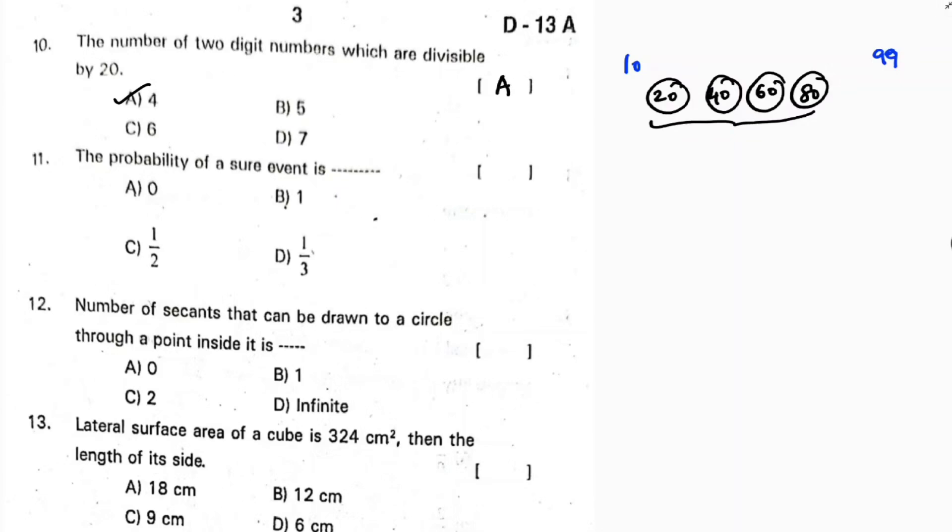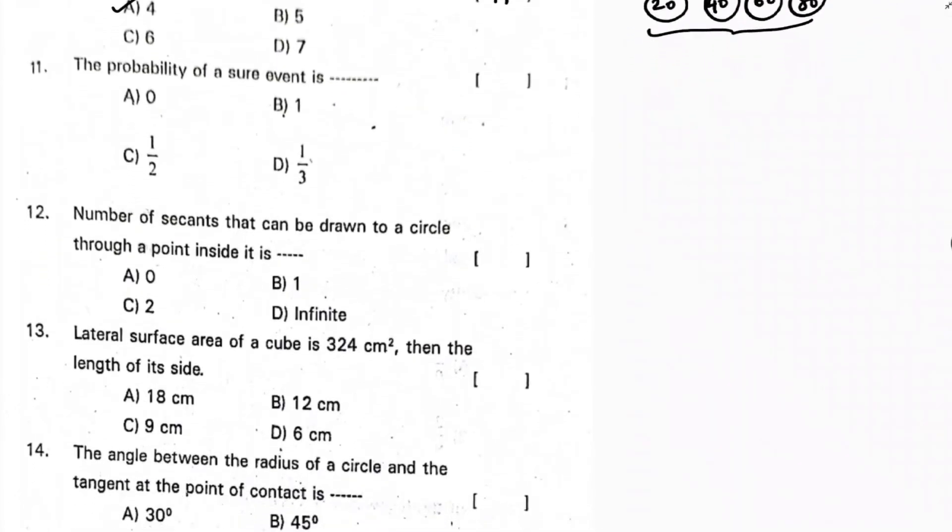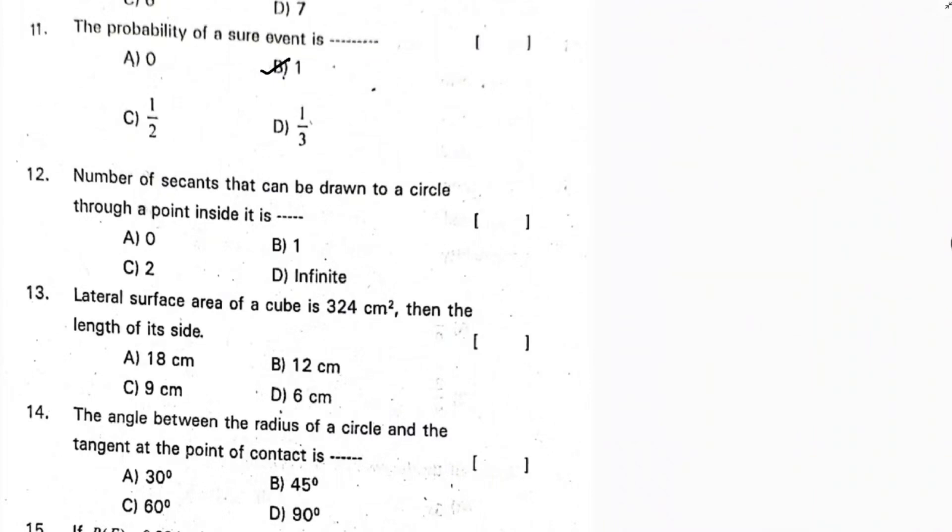Next: the probability of a sure event is 1, because a certain event is one that is guaranteed to happen. Correct option is B.